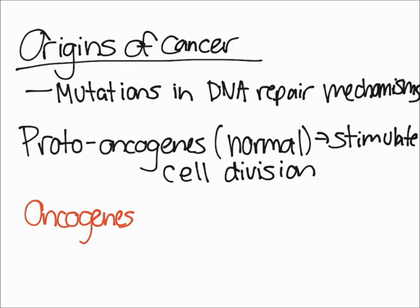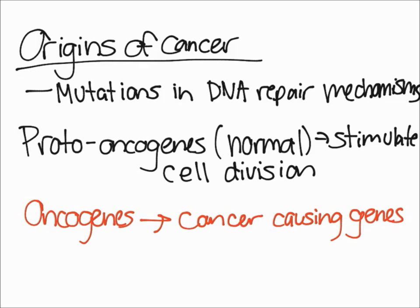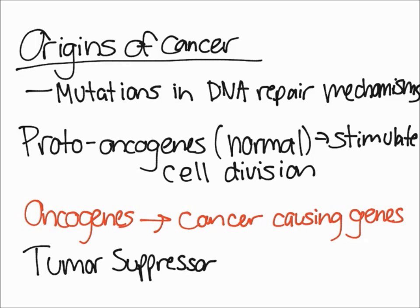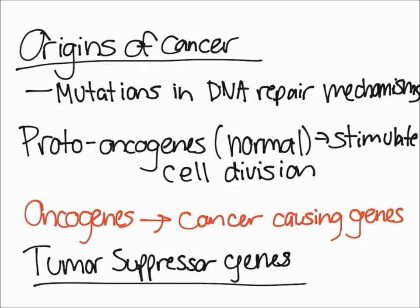Oncogenes are bad — they're cancer-causing genes. Another type is tumor suppressor genes. These genes inhibit the cell cycle when they're turned on, essentially making sure that nothing gets out of hand. They're like the first defense system against cancer. But if these genes are shut off, then cancer cells can divide.